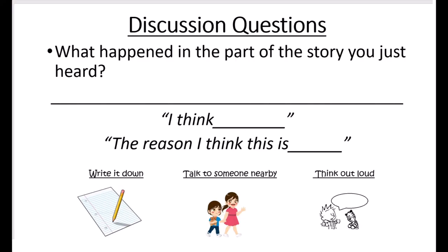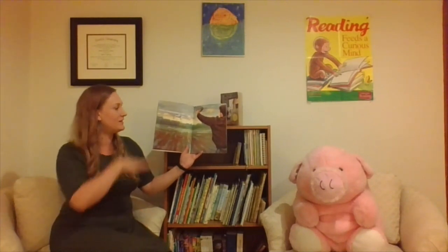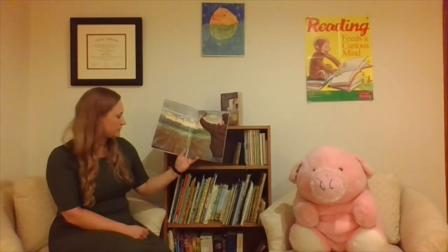What did you learn in the part of the story you just heard? In this part of the story, Lindbergh's plane almost didn't make it — there was a telephone wire and they were worried he was going to catch it, but instead his plane got off the ground and was able to rise above it. Now he is headed toward Paris, which is 30 hours away.